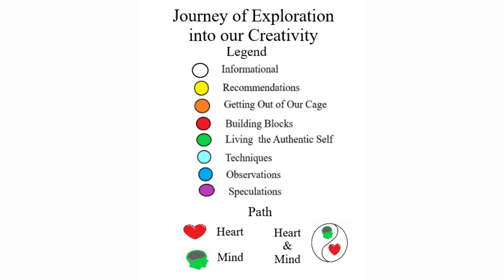The colors are as follows. A white circle with black boundary represents informational topics. These are topics that provide some type of information which may or may not be related or applicable to one's personal journey. For example, the life events of the author that gave rise to the whole journey of exploration into creativity and gave rise to the understanding of the life path would lie in this area.